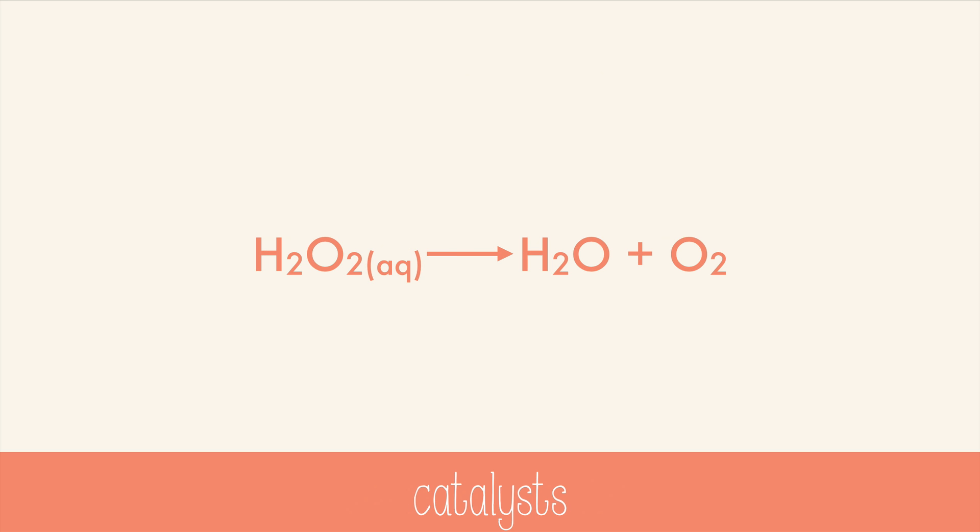Some reactions use catalysts to speed up the reaction. Catalysts aren't changed during the reaction, so they're not part of the reaction. But to show that they're used to speed it up, the catalyst is written over the arrow. In this case, manganese dioxide is used as a catalyst for the decomposition of hydrogen peroxide.